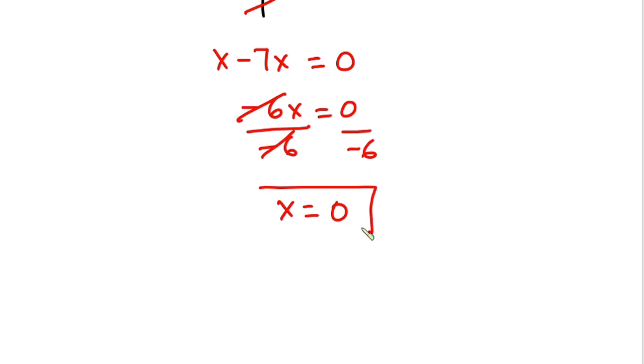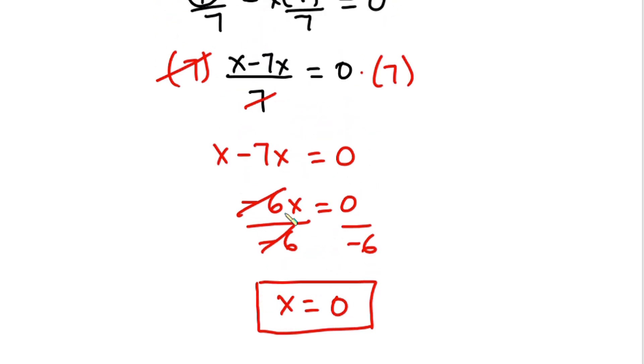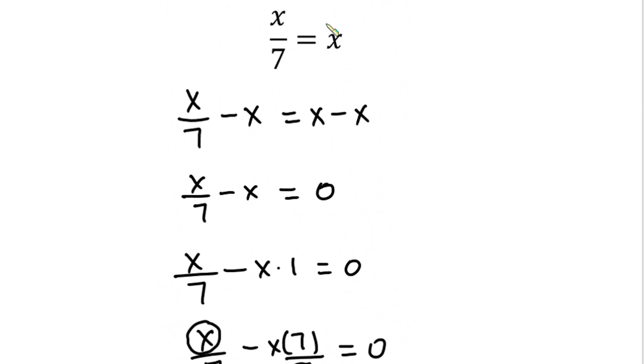So the value for x in this equation is x equals zero, and we can test that. We're gonna have zero over seven which is zero. So guys, subscribe to my channel for more videos. Thanks for watching, bye-bye.